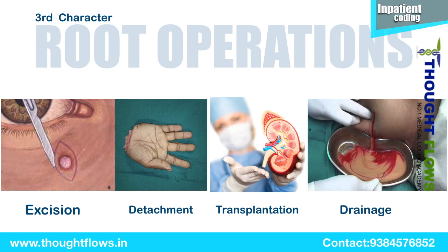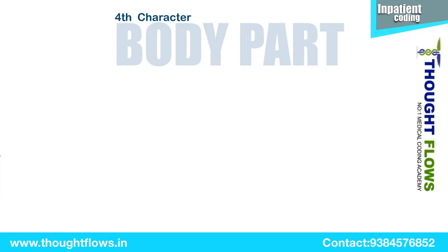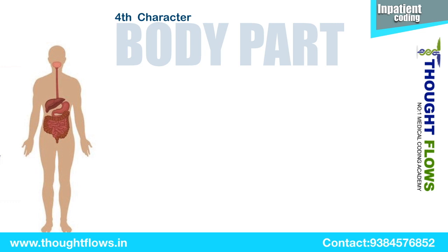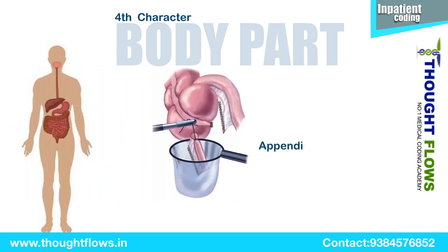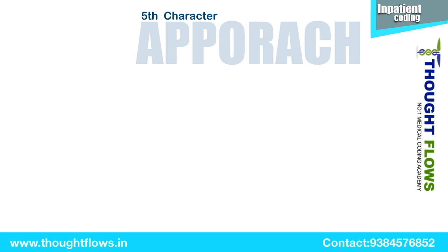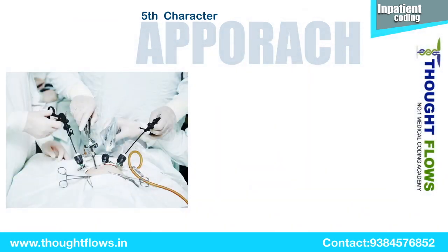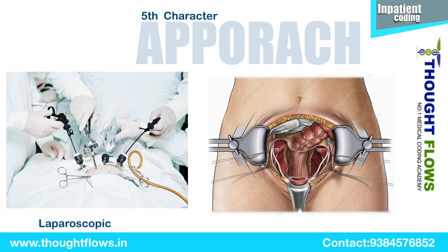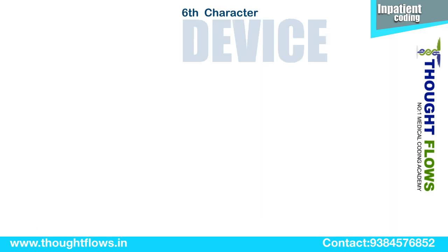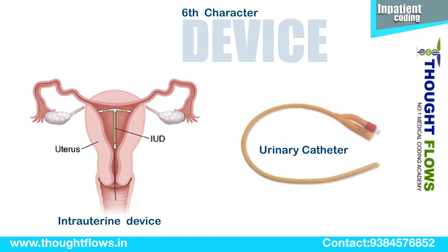In total, we have 31 root operations in PCS coding. The fourth character is Body Part, which is an anatomical site. For example, from the gastrointestinal system, if they remove the appendix, then appendix is the body part. The fifth character is Approach, which defines the technique used to reach the site of the procedure. For example, if they make an incision in the abdominal cavity to place a scope, it will be a laparoscopic approach, or if they open the specific region it will be called an open approach. The sixth character is Device, which includes only devices that remain after the procedure is completed, like intrauterine devices, urinary devices, etc.